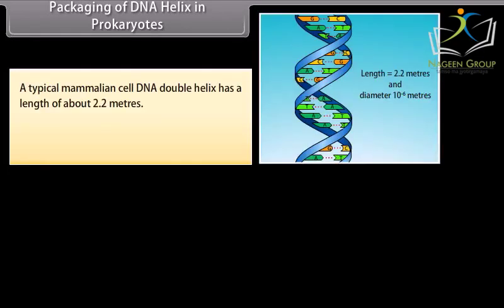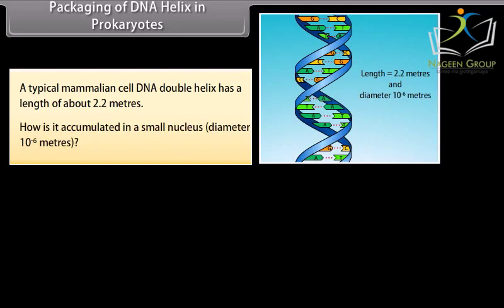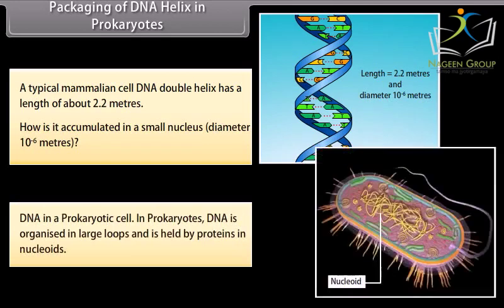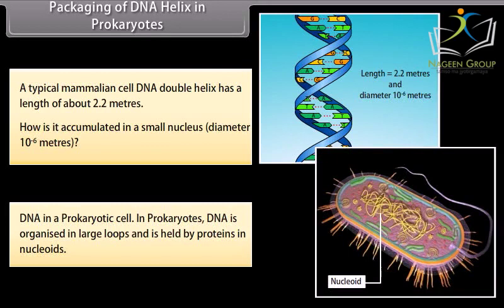Packaging of DNA helix in prokaryotes. A typical mammalian cell DNA double helix has a length of about 2.2 meters. How is it accumulated in a small nucleus? In prokaryotes, DNA is organized in large loops and is held by proteins in nucleoids.